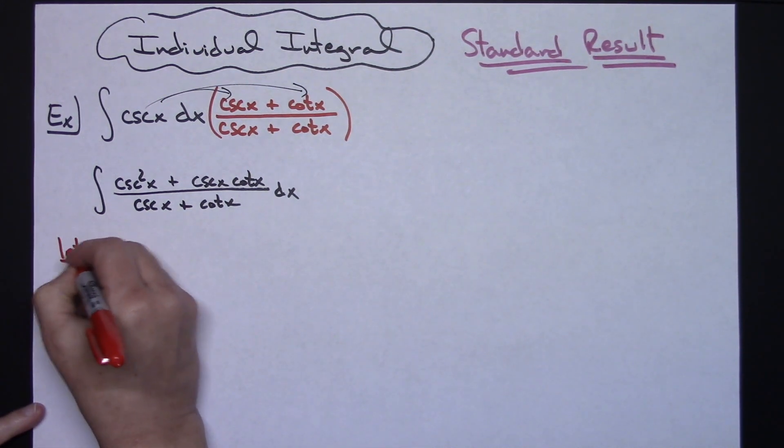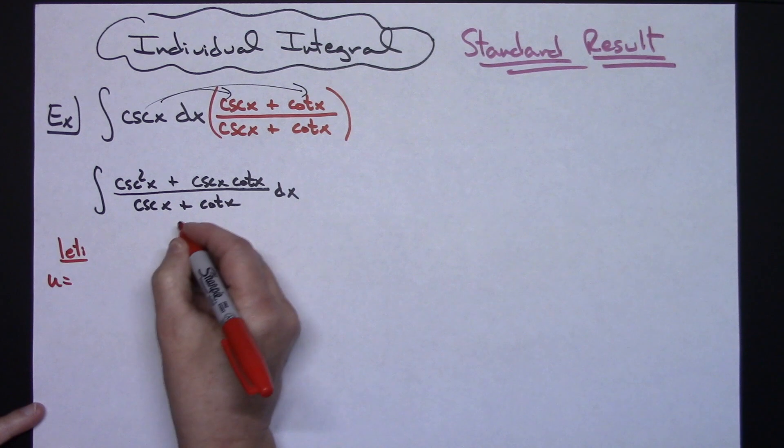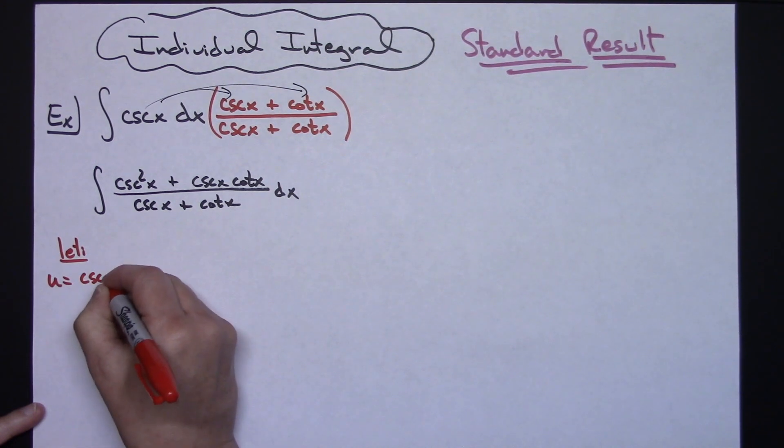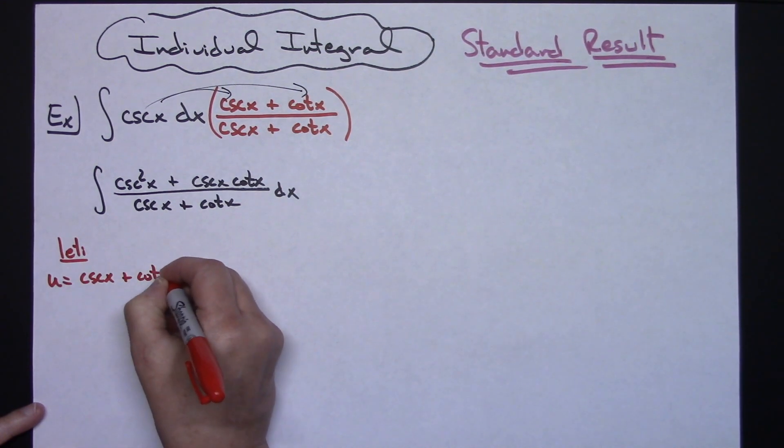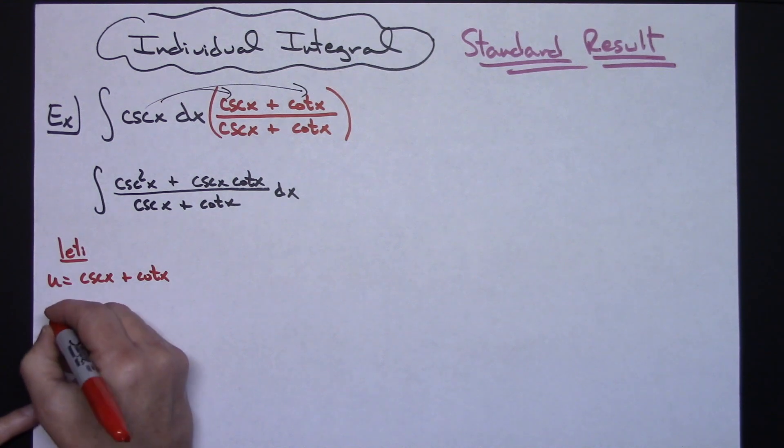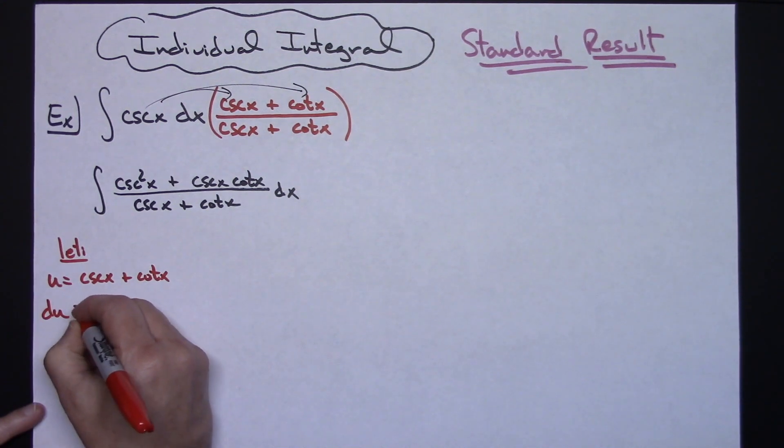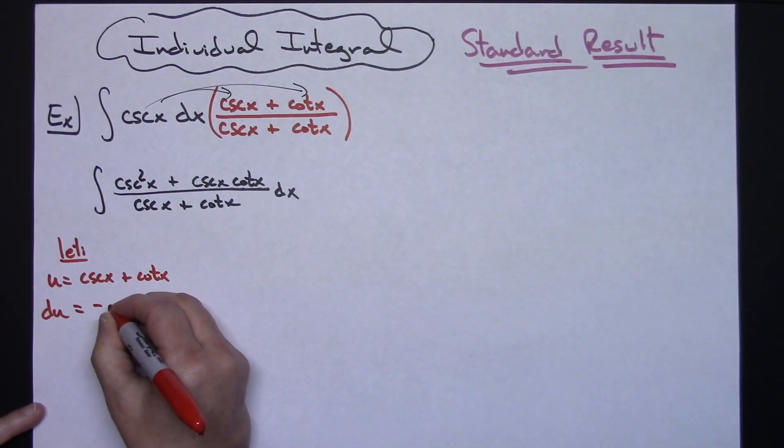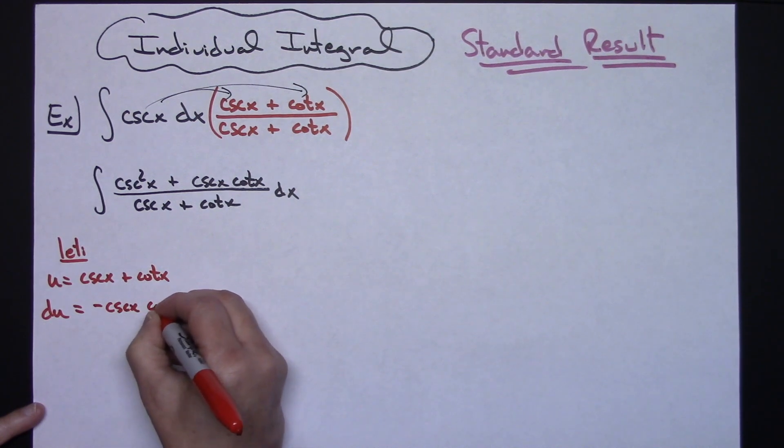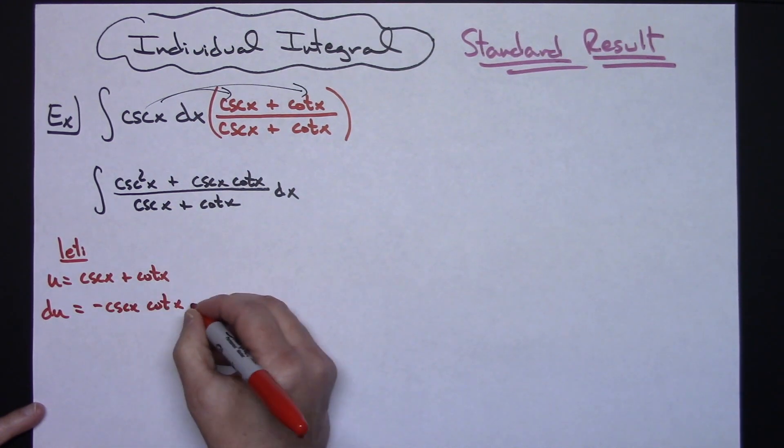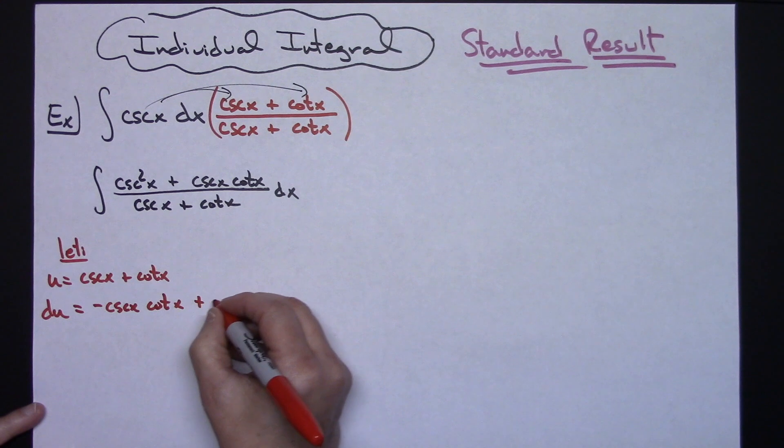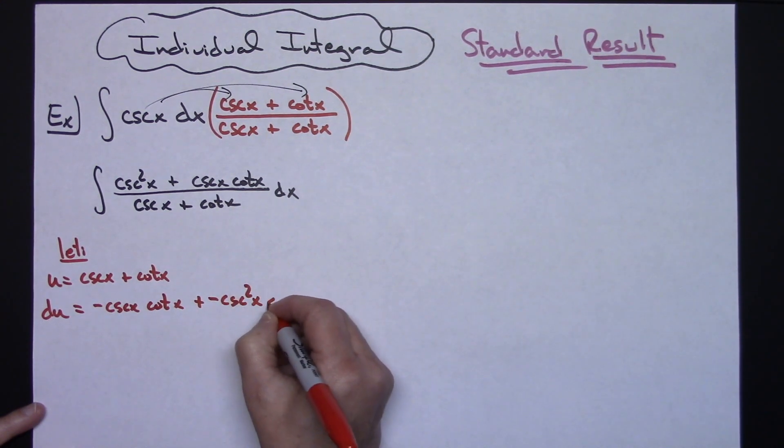Let u equal cosecant x plus cotangent x. Taking the derivative of both sides, du equals negative cosecant x cotangent x minus cosecant squared x, dx.